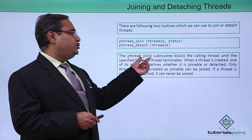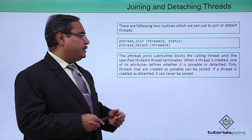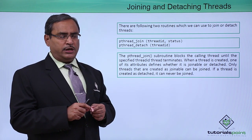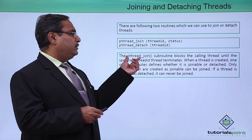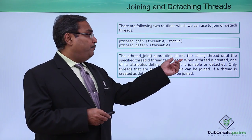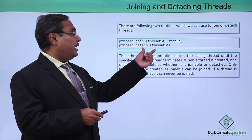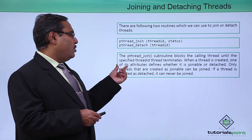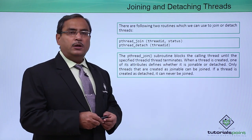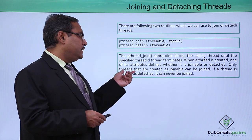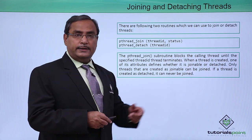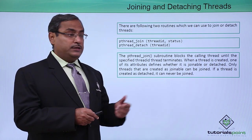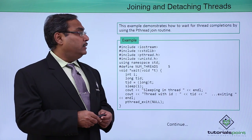The pthread_join subroutine blocks the calling thread until the specified thread ID terminates. That is why two threads become dependent in their execution and termination. When a thread is created, one of its attributes defines whether it is joinable or detached. Only threads that are created as joinable can be joined. If a thread is created as detached, it cannot be joined afterwards. We will discuss this with a sample program for better understanding.